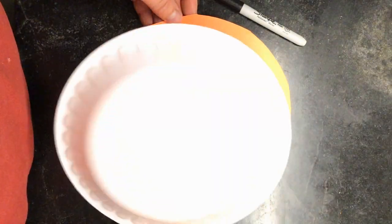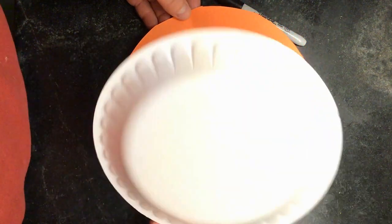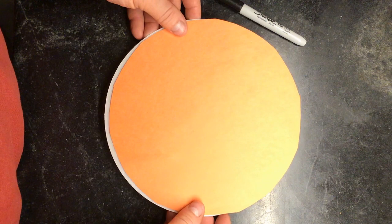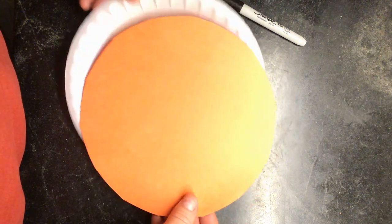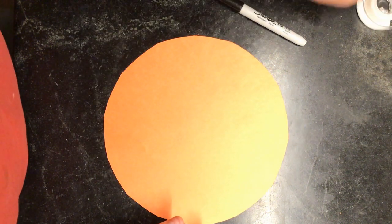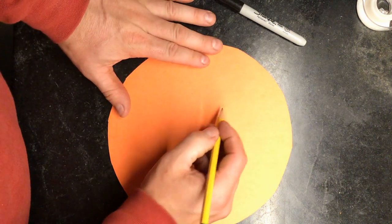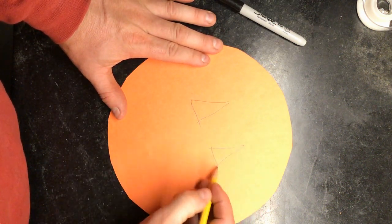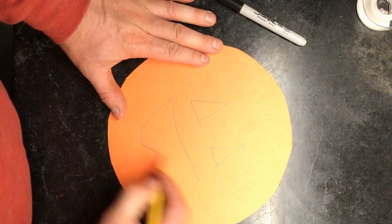Now to get started on the face of our jack-o'-lantern, we simply use the plate to trace a circle on a piece of construction paper and cut it out. Now I'm ready to draw a face. For this, I would suggest starting with a pencil, just in case you make a mistake, and then going over those pencil lines with a nice dark marker.